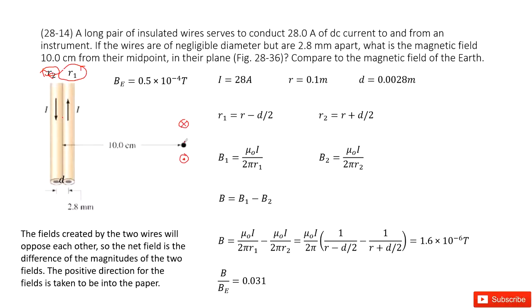So the magnetic field at this given point are in opposite directions. We take the in as positive, so B1 is positive. B2 is negative.